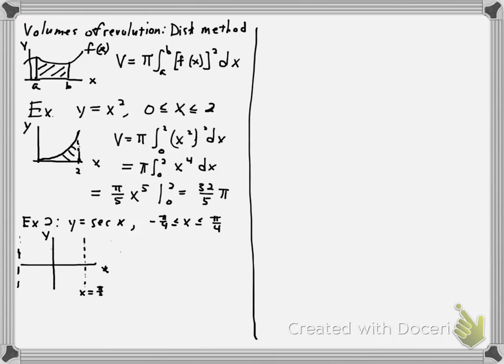From there, secant actually forms this u-shape. It forms a u-shape where it asymptotes as x approaches pi over 2 from the right. It also goes off to infinity as x approaches minus pi over 2 from... I'm sorry. The graph of secant will approach positive infinity as x approaches pi over 2 from the left, and it also approaches positive infinity as x approaches minus pi over 2 from the right.